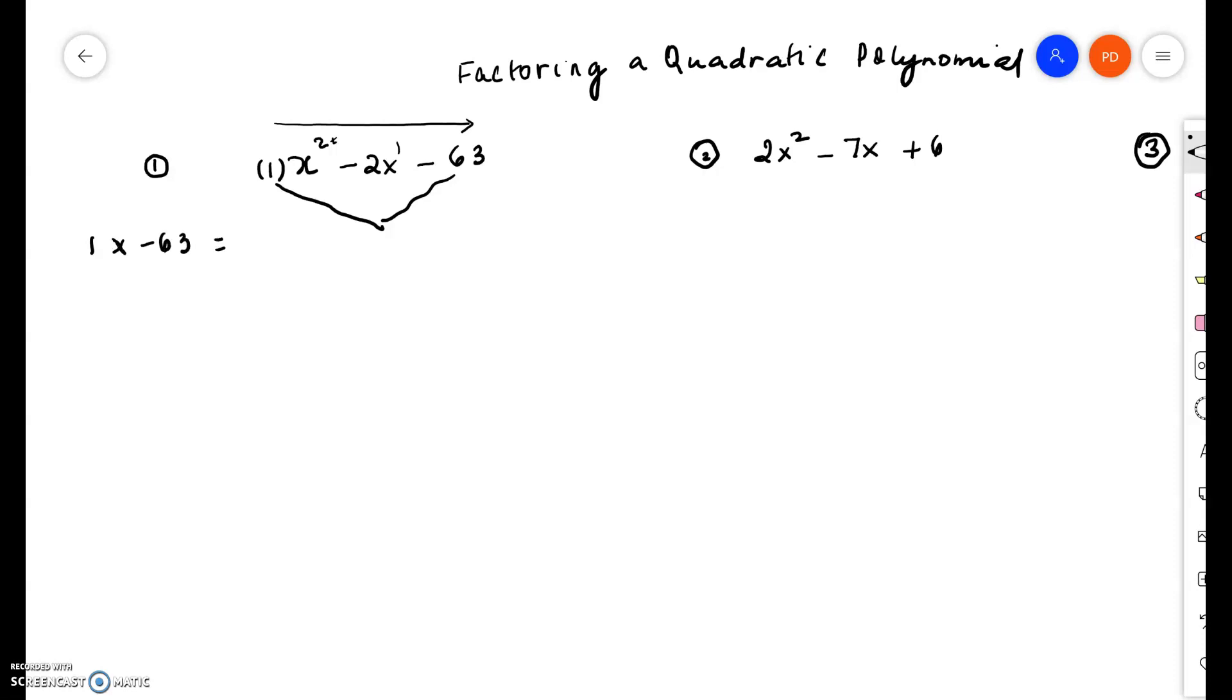And 1 times negative 63 is negative 63. Now think of all possible factors of negative 63, but remember that these factors must add up to negative 2.